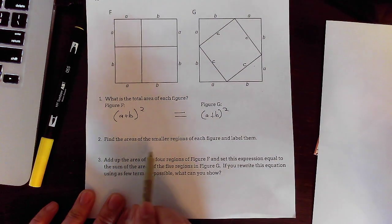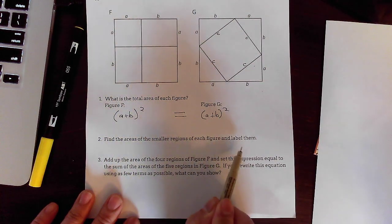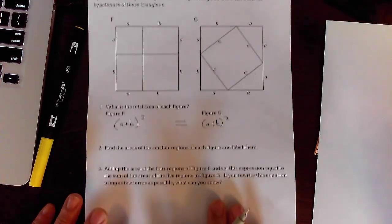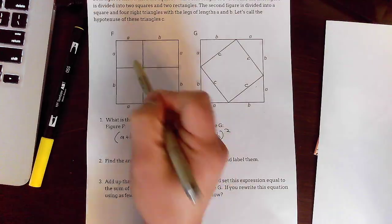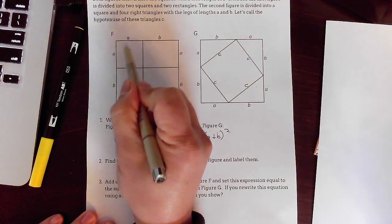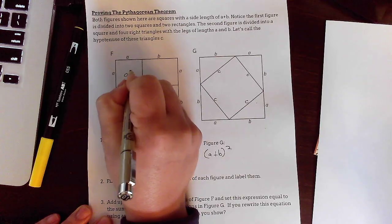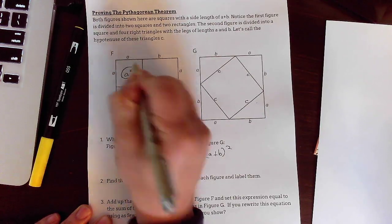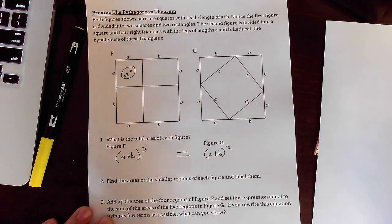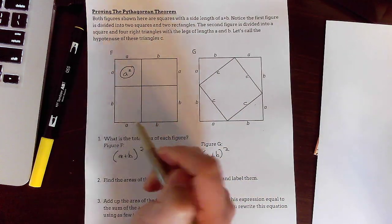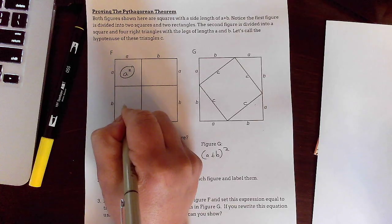And then it says here, find the areas of the smaller regions of each figure and label them. All right. No problem. We can handle that easily here. That's just A times A. So I'm going to call that A squared. Now I'm just going to circle it just to keep it a little bit organized. If I'm talking about an area, it's going to be in a little circle like that.